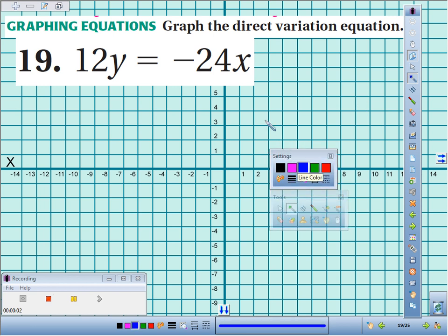Number 19, we're going to graph the direct variation equation 12y equals negative 24x.